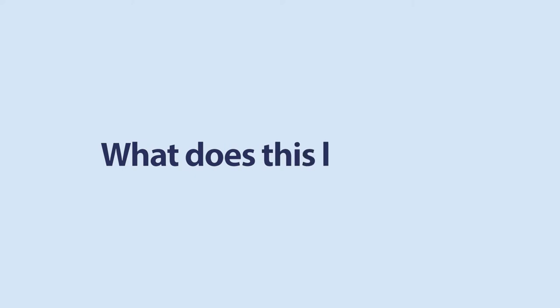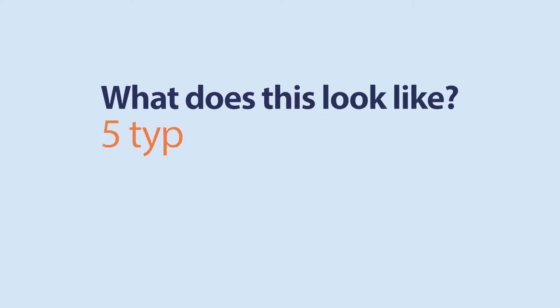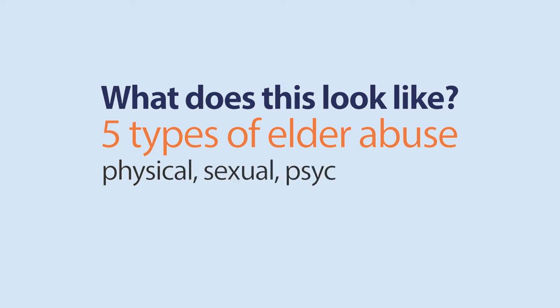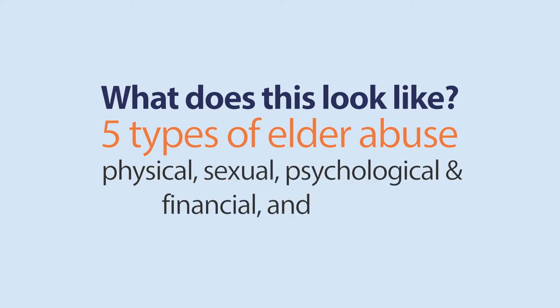What does it look like? There are five different types of elder abuse: physical, sexual, psychological and financial abuse, and neglect.